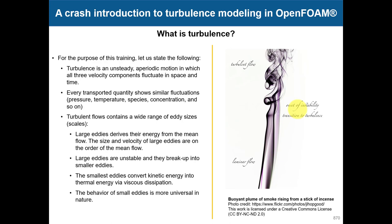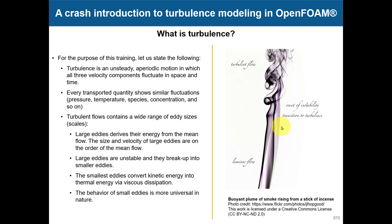Turbulent flows contain a wide range of eddy sizes, scales, or vortices. Large eddies derive their energy from the mean flow; the size and velocity of these large eddies are on the order of the mean flow. These large eddies are very unstable and break up, forming smaller and intermediate eddies. The smallest eddies convert all kinetic energy into thermal energy via viscous dissipation - that is where turbulence is dissipated. The behavior of small eddies is more universal in nature, which is a big assumption underlying many turbulence models.